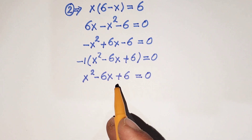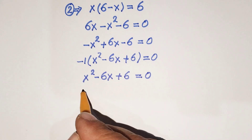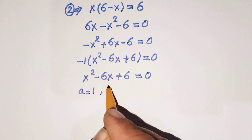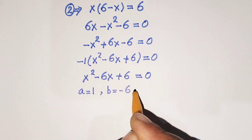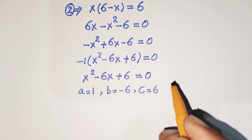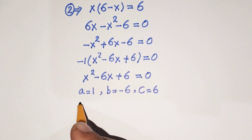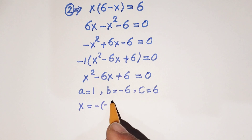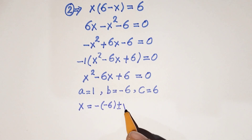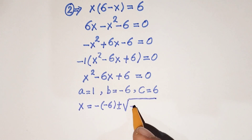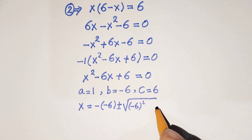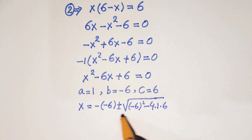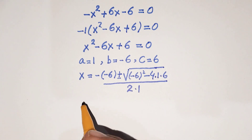We can solve this quadratic equation using the quadratic formula. Here a equals 1, b equals minus 6, and c equals 6. Using the quadratic formula x equals minus b plus or minus the square root of (b squared minus 4ac) divided by 2a, we substitute: x equals minus(minus 6) plus or minus the square root of (minus 6) squared minus 4 times 1 times 6, divided by 2 times 1.